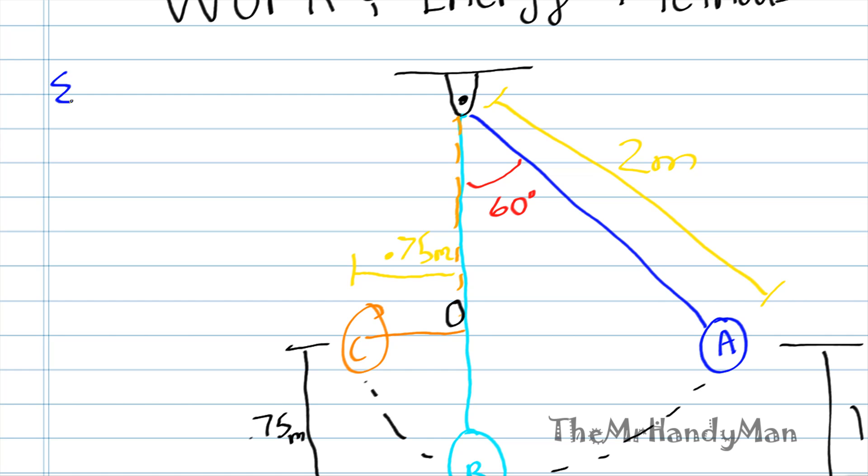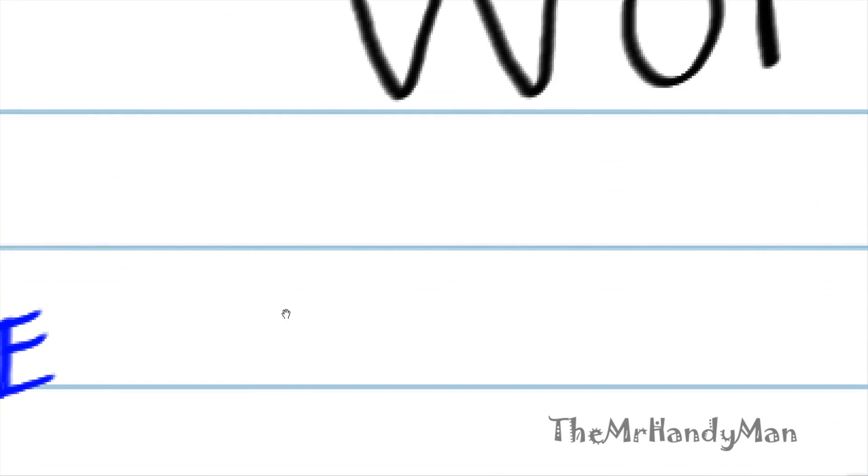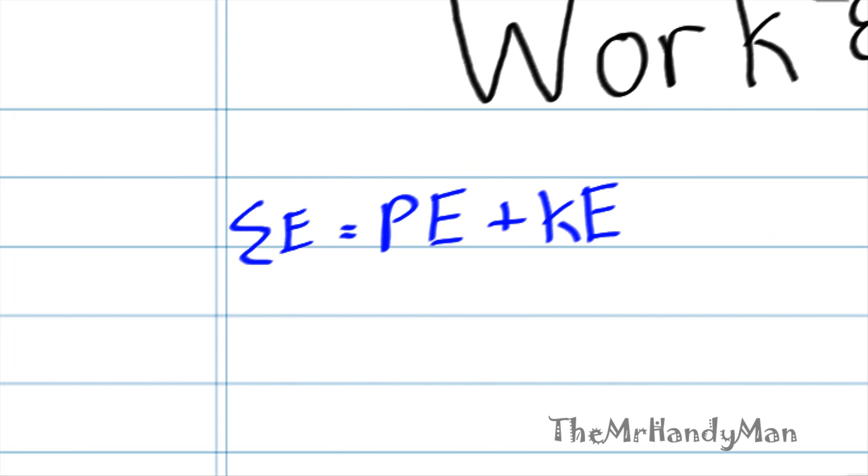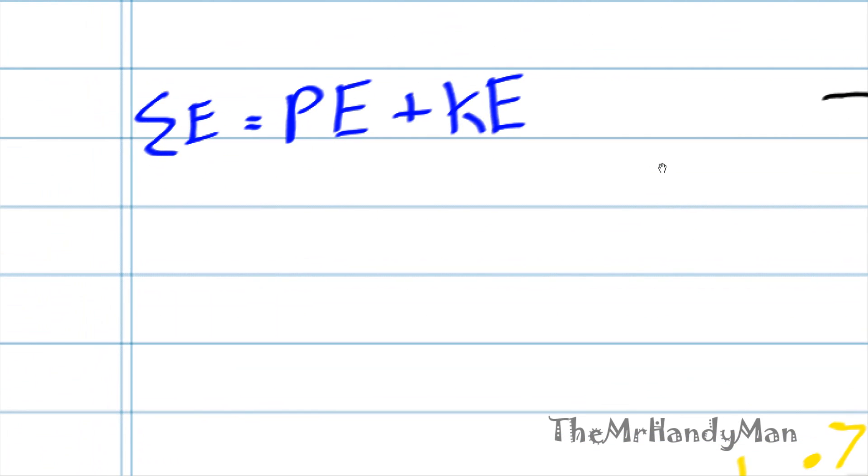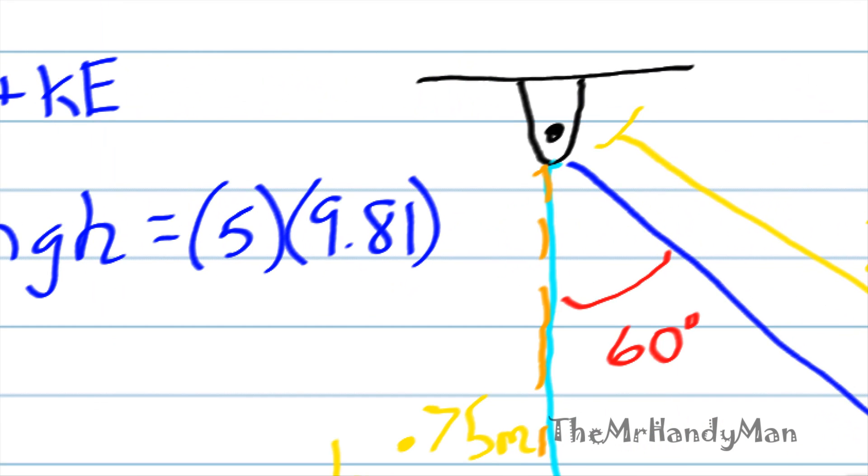We know that the total energy equals PE plus KE. Since the motion, the VA, is zero, you know that's all going to be potential energy. PE is equal to MGH, which is the mass of this ball, which I'm going to make up one right now. Let's just say five, G, which is going to be 9.81, and H, which we gave an H of one.